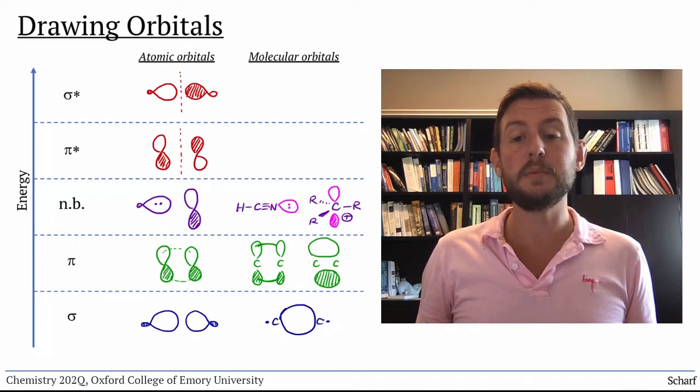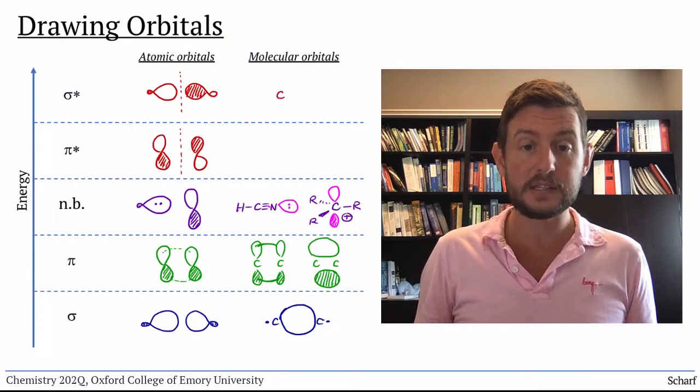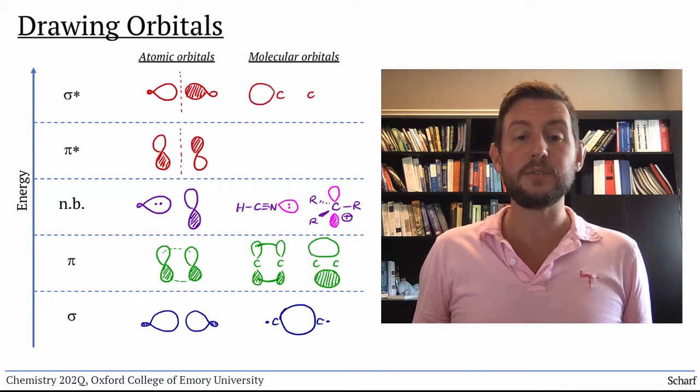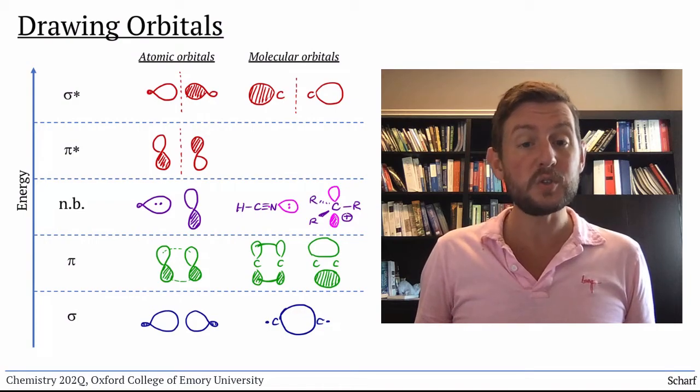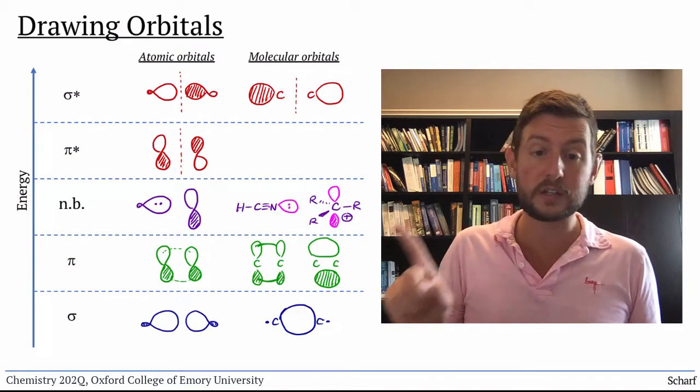We usually draw sigma-star orbitals like this, mostly outside the two atoms, with a node in between. Make sure that you switch phases whenever you cross a node.